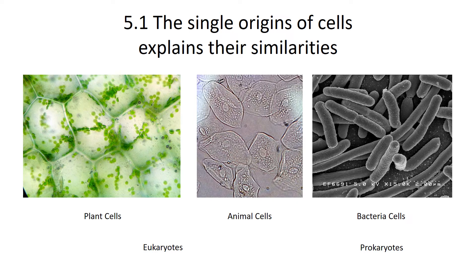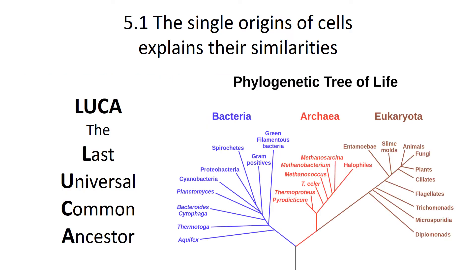Life almost certainly got started one time on this planet. It may have gotten started earlier, and it may have gotten started multiple times, but those other experiments with life almost certainly did not make it. All modern life today — every plant, animal, and bacteria — came from a single common ancestor that emerged from probably a hydrothermal vent about 3.8 billion years ago. That is important because the single origin of life explains all the similarities between plants, animals, and bacteria. We affectionately call that last universal common ancestor LUCA.